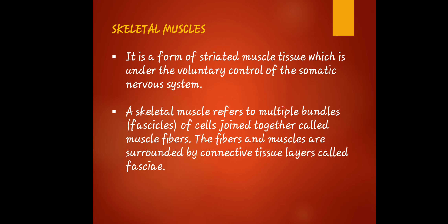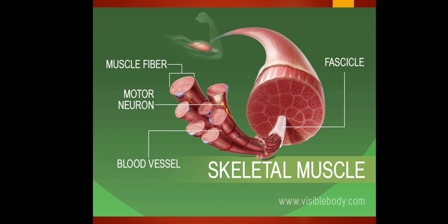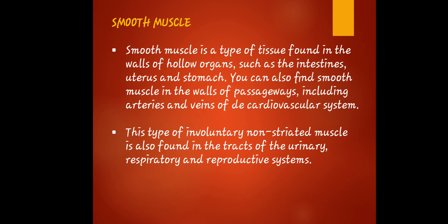Here is a picture showing the appearance of skeletal muscle, including the parts of the fascicle, muscle fiber, motor neuron, and blood vessels.